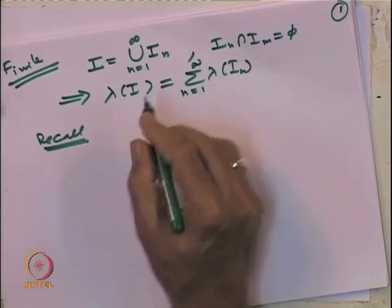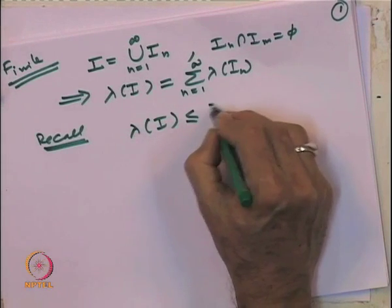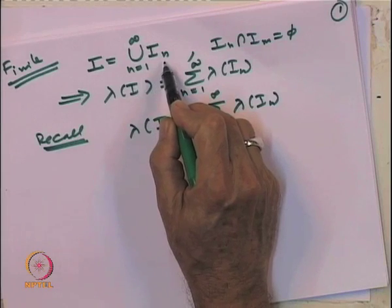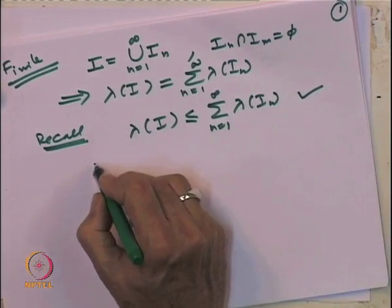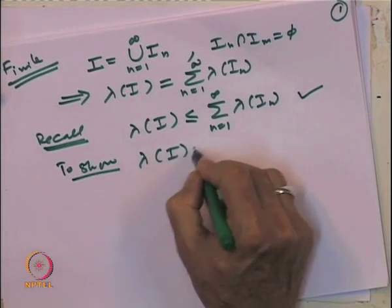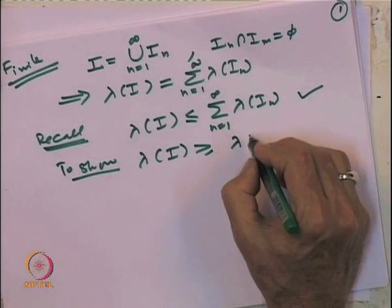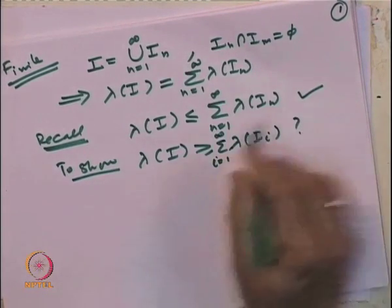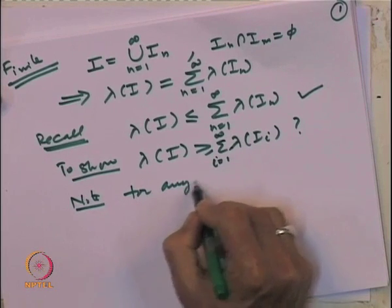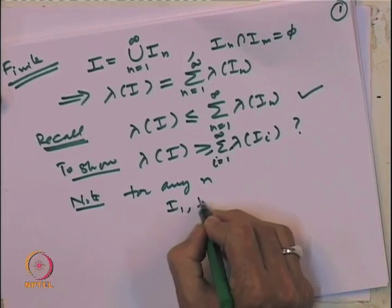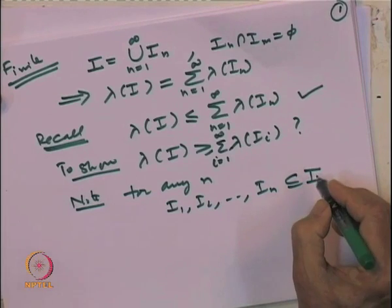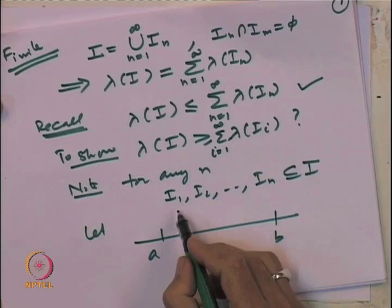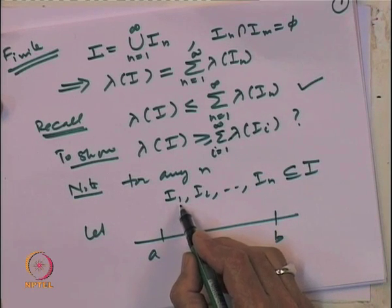We have already shown that length of I is less than or equal to sigma length of I_n, because I is covered by the union of intervals. To prove the other direction, we need to show length of I is greater than or equal to sigma length of I_n. For any n, the intervals I_1 up to I_n are contained in I, which is finite with endpoints A and B, and each I_i has endpoints A_i and B_i.